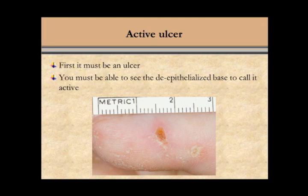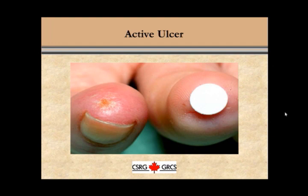Once you determine that there is an ulcer present, it must be determined whether the ulcer is active, whether it is healed, or whether you just cannot tell — and we will call that an indeterminate ulcer. Any lesion must first be determined to be an ulcer, but then you must be able to see the de-epithelialized base, as you can in this ulcer here. If you can, that ulcer is then determined to be an active ulcer. You must be able to see that base to determine if you have an active ulcer. This area here is probably an active ulcer because we are looking at the de-epithelialized base. Even though this ulcer may be closing in, if you feel that you can see the de-epithelialized base, you should determine this to still be an active ulcer.